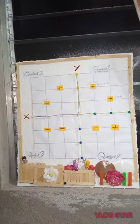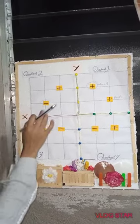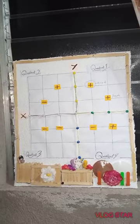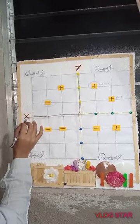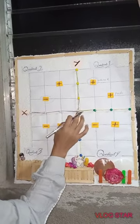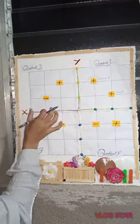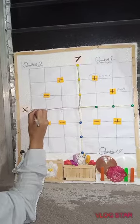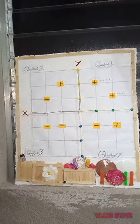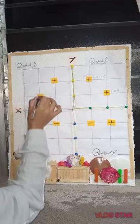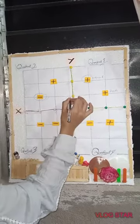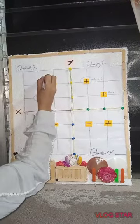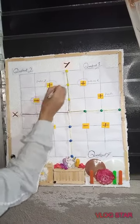Let's proceed to quadrant 2. In quadrant 2, there are two sides: negative and positive. Our x-axis values here are negative 1, negative 2, negative 3, so our abscisa here is negative. The y-axis values are 1, 2, 3 — all positive — so our ordinate is positive.